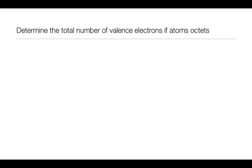The first thing that we do when we're drawing a Lewis structure for a molecule is determine the total number of valence electrons if the atoms were to have octets.